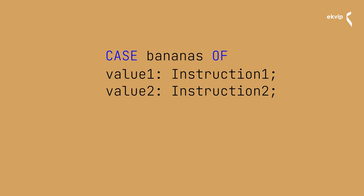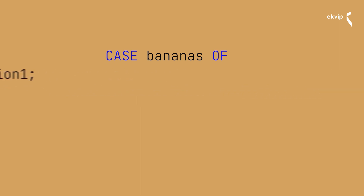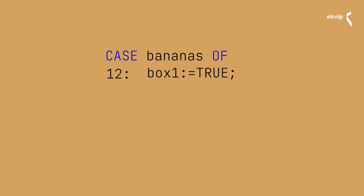Let's take a look at the syntax. It starts with 'CASE bananas OF' — bananas is a variable of type int. The value of this variable gets tested. In the next line you can declare an instruction to be executed when the variable has the defined value. The defined value is 12; after the colon the instruction follows: box1 equals true. If bananas has the value 12, the variable box1 of type bool becomes true. If the statement is to be executed for more than one value, you can write the values separated by commas.